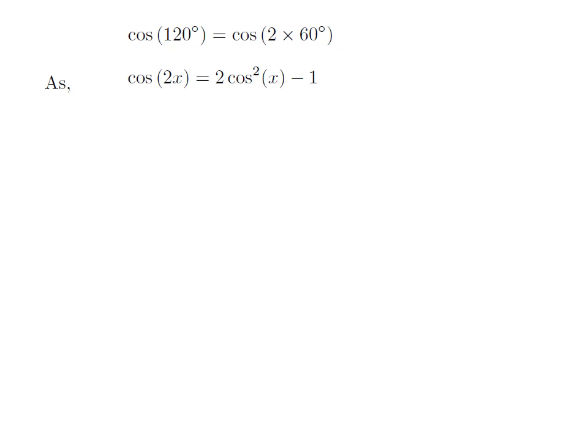As we know, the trigonometry identity cosine of 2x is equal to 2 times square of cosine of x minus 1. The video explaining how to derive this identity is appearing in the upper right corner. Also, the URL address of the video has been mentioned in the description section.